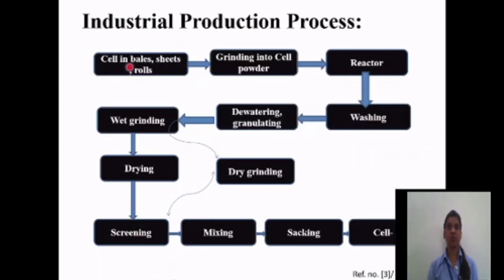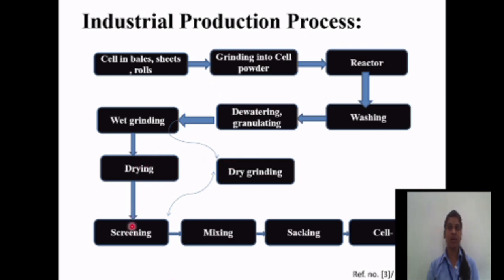These are the industrial processes of cellulose ether. Cellulose is taken in the form of base sheets and rolls, then tested into a fine powder. The cellulose powder is fed through a reactor, then through a washing bath where washing takes place using detergent. Next, watering and granulating of the powder takes place. Grinding consists of a two-step drying and dry grinding process, followed by screening, mixing, sacking, and final cellulose ether production.